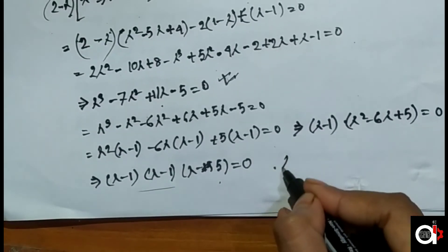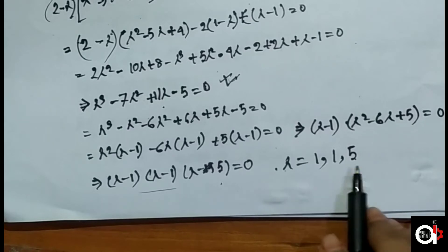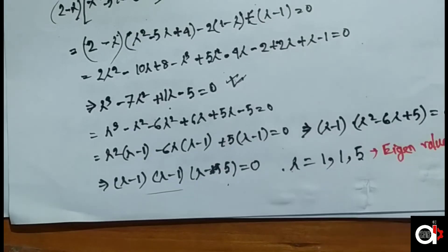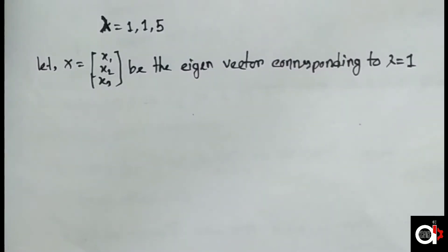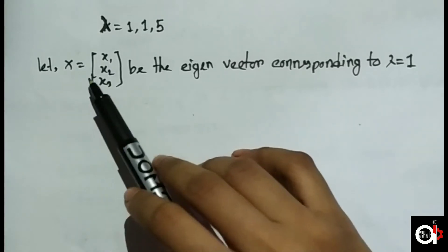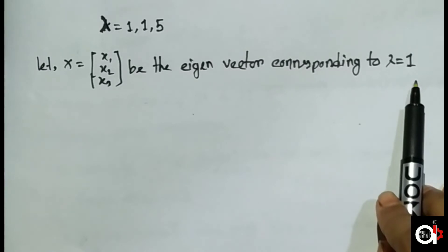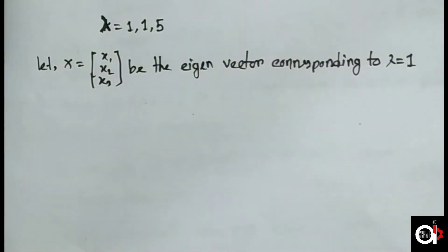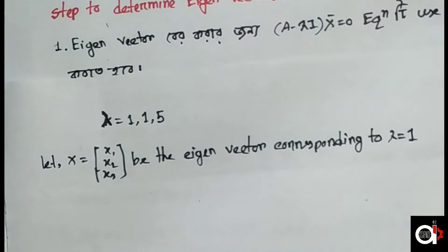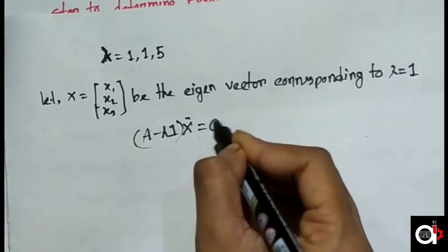So, this gives us the eigenvalues. The lambda values are 1, 1, and 5 — these are our eigenvalues. Now, let x be the eigenvector corresponding to lambda equals 1. When the eigenvalue is 1, we find the eigenvector using (A minus lambda I) into x equals zero, substituting lambda equals 1.